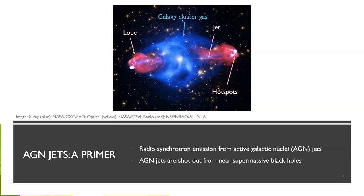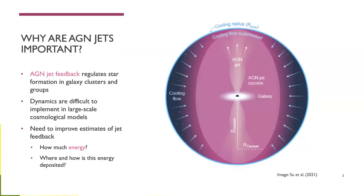The AGN jet interacts with its environment, and that's why we're interested in looking at it. We're pretty certain at this point that feedback from AGN jets is pretty important for galaxy formation and evolution. In galaxy evolution models, they implement some form of feedback, but these models are done on really large scales and you can't actually resolve a jet. What the UTAS team is really interested in is how we can simulate AGN jet feedback and get a better idea of how feedback occurs in galaxy clusters for these large-scale models.